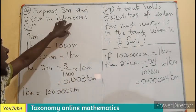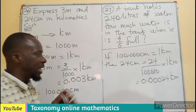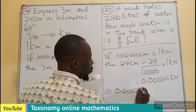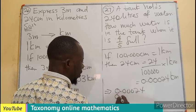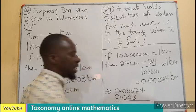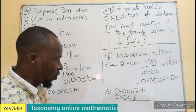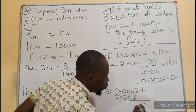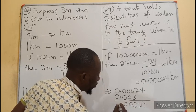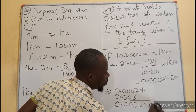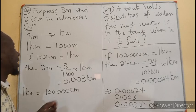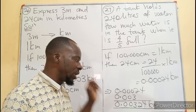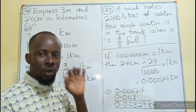We are leaving our answer in kilometers, so the two values can be added together. This means 0.00024 plus 0.003 must be added. Don't forget this empty space can take zero. We get 0.00324 kilometers. So the answer is 0.00324 kilometers.